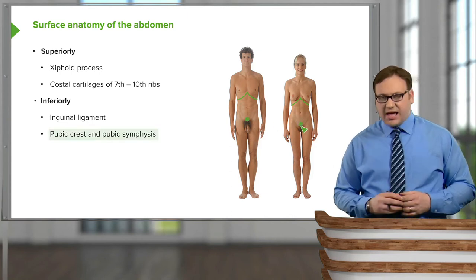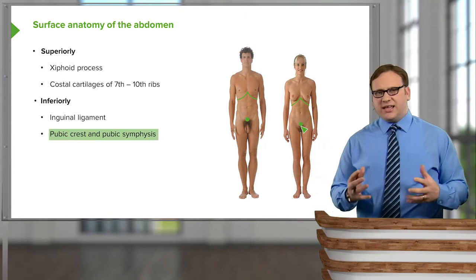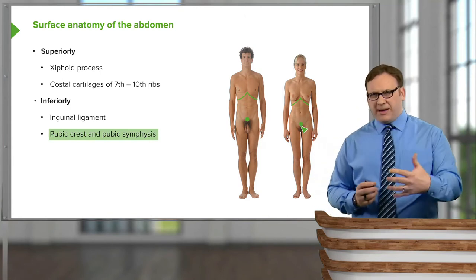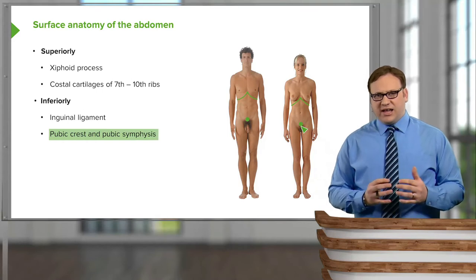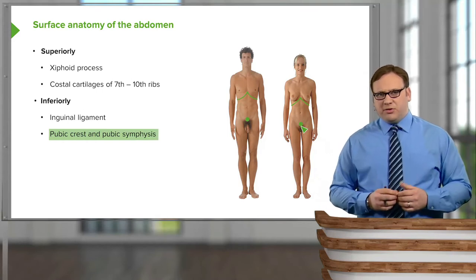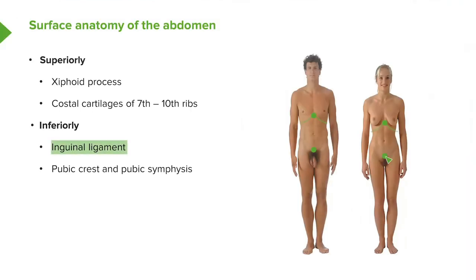In the midline, in both the male and female, we have the pubic crest and the pubic symphysis. Radiating away from the pubic crest and pubic symphysis, we find the inguinal ligaments — one on either side — and these form the inferior boundary of the abdomen. So here we can see the superior and inferior boundaries of the abdomen in both the male and the female.